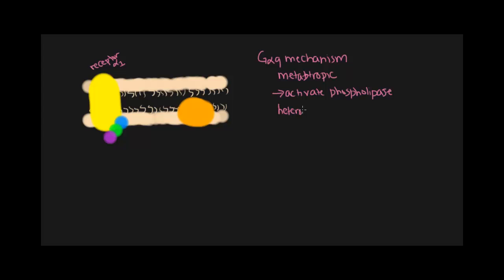G-proteins are heterotrimeric, meaning that they have three subunits. As you can see here, this purple is the alpha subunit, green is the beta subunit, and blue is your gamma subunit. And lastly, here in orange, we have our effector protein, and this effector protein, in our case for this G-alpha-Q mechanism, is phospholipase C.